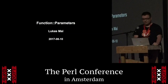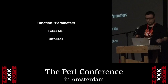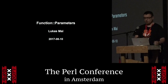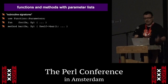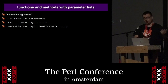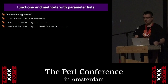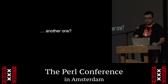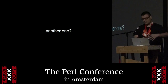Hi, my name is Lucas Mai. I have this module called Function::Parameters, which some people apparently don't know about but they should. What it does: it gives you functions and methods with parameter lists, which are often called subroutine signatures. But I don't like that name because they're not really signatures — they're just parameter lists like this. You might be wondering, another one? Because there are like a dozen modules that do this on CPAN and there are in-core signatures now.